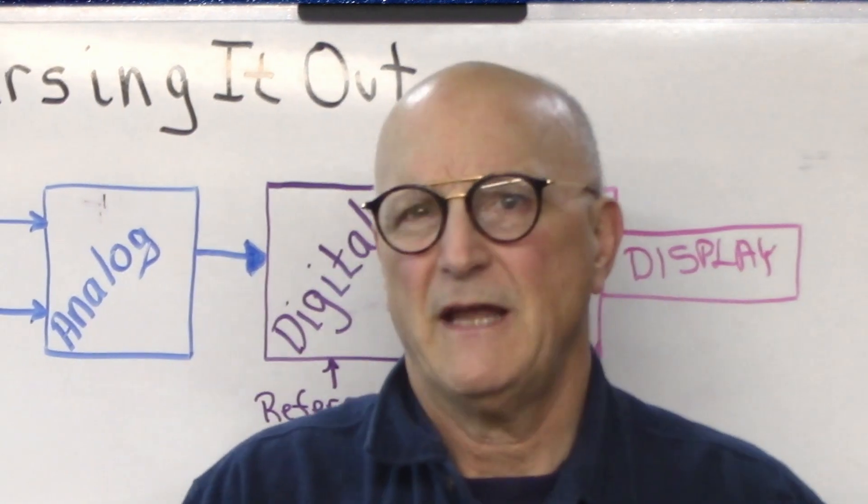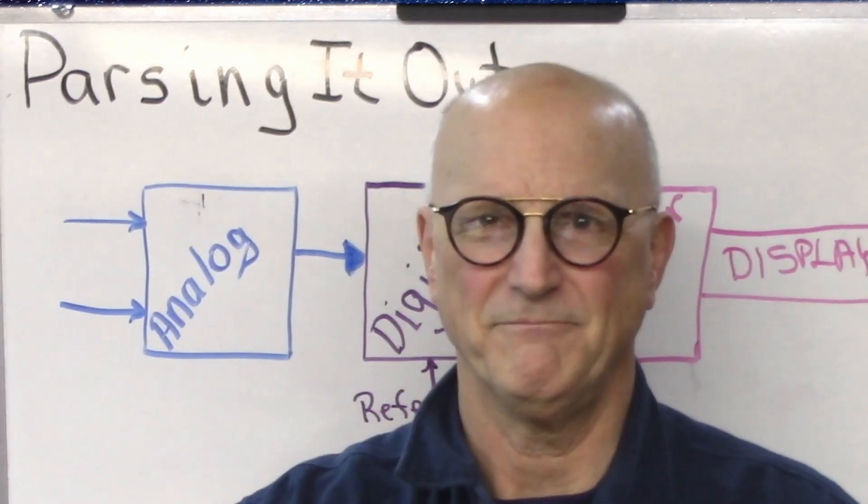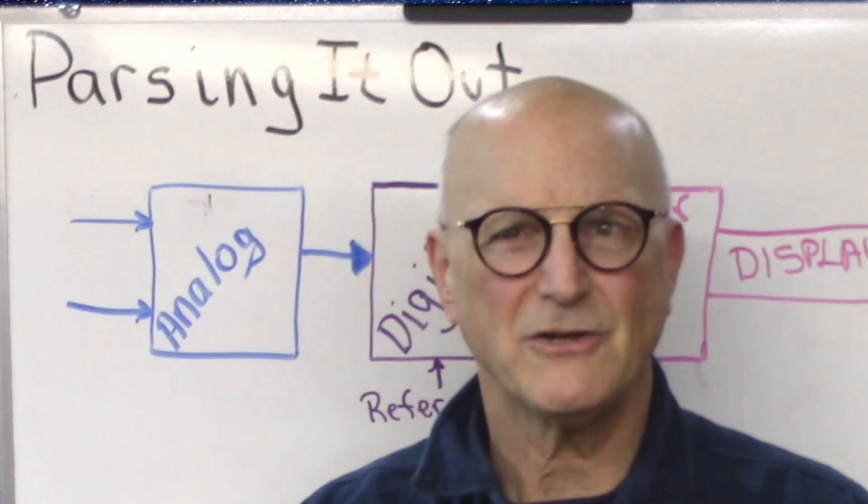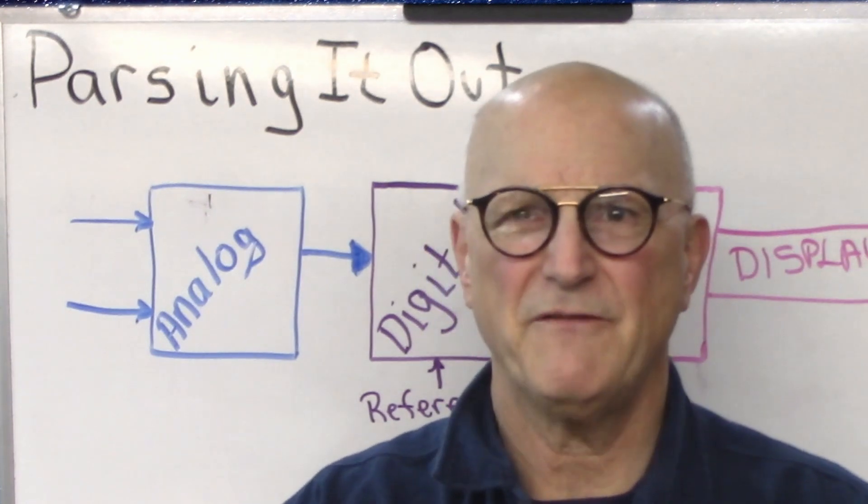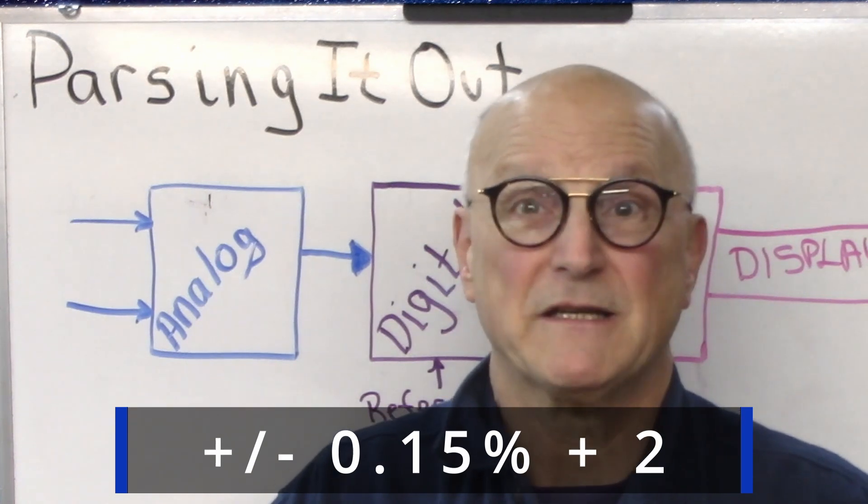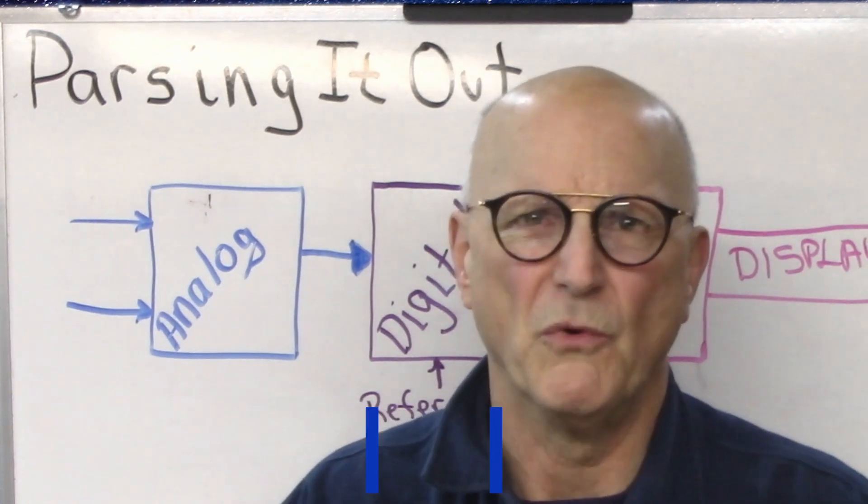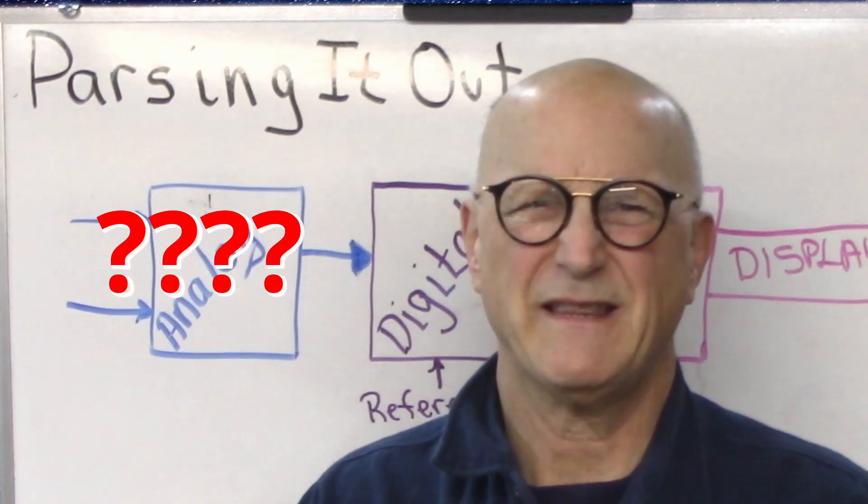Every meter is going to be right within a certain particular tolerance. Now in the ancient past this used to be easy, plus or minus three percent, done. But now take a look at the specifications for your DVM and we see something that might look like plus or minus 0.15 percent plus two.